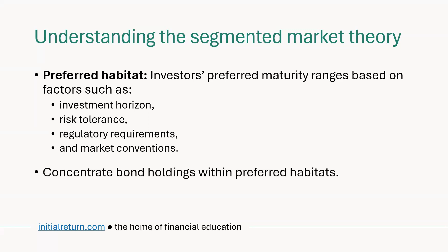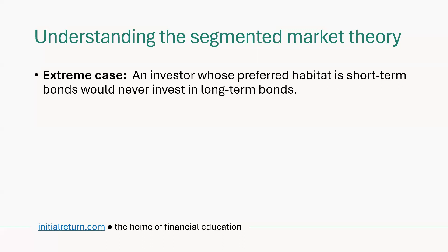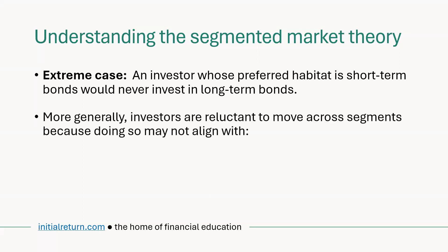Each of these factors essentially contribute to market segmentation in the bond market, resulting in investors concentrating their bond holdings within their preferred habitats. In fact, another name for this theory is the preferred habitat theory. Taken to the extreme, this would mean that a short-term bond investor would never invest in long-term bonds, however attractive they might be, and vice versa. Of course, this is a bit unrealistic — more generally, we would expect a general reluctance to invest in a different segment, due to investment strategies or risk tolerance.